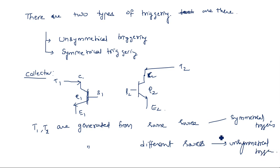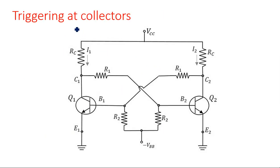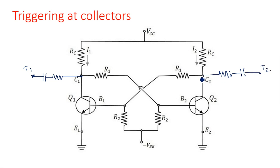The same concept is applicable to the bases, but the location is different. When applying the triggering pulse at collectors, there is a capacitor followed by a resistor in the circuit. This is the triggering pulse T1. Let us now see how this circuit operates with respect to the triggering pulse.